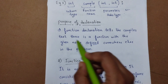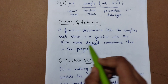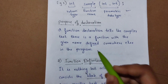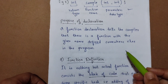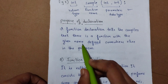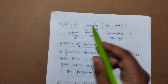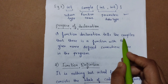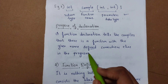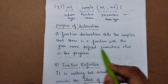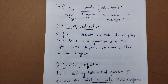Now let's discuss the purpose of a function declaration. A function declaration tells the compiler that there is a function with the given name — in our case, 'sample' — defined somewhere else in the program. It means our code contains a function whose definition is written somewhere else.